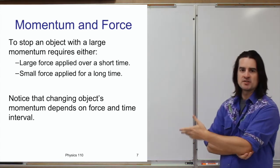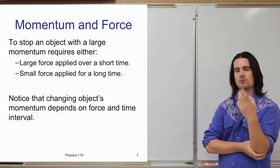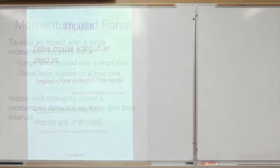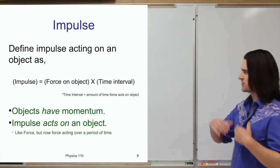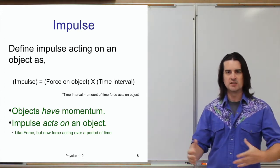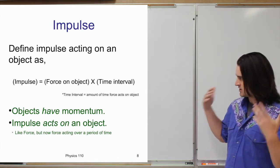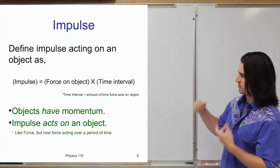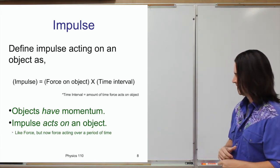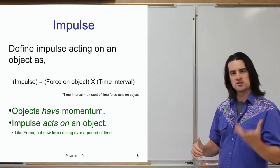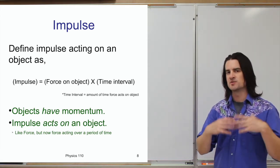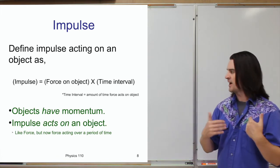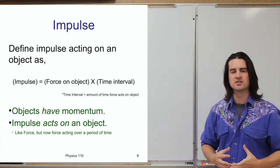Changing an object's momentum requires force and involves a certain time interval — that force needs to be applied for a certain amount of time. It turns out that force applied for a certain time is what we call an impulse. An impulse is exactly equal to a force multiplied by the time that force is applied. Momentum is a quality of an object — something it has because it's in motion. An impulse is more like a force in that it acts on an object; it is basically a force applied over time.